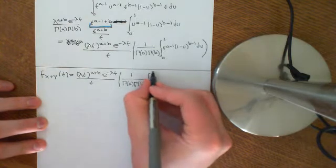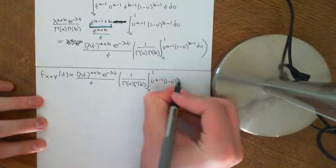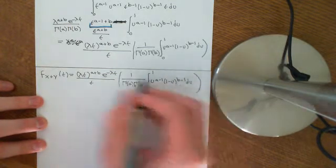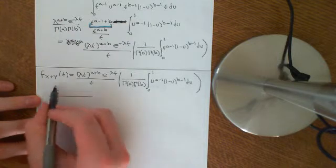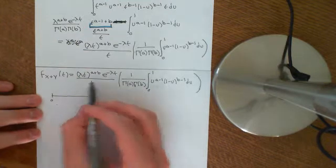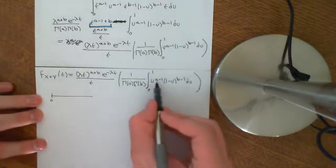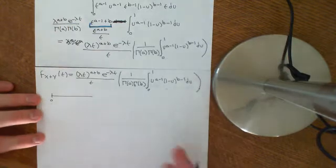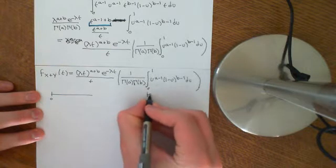Then times the integral from 0 to 1 of u to the power of a minus 1, times 1 minus u to the power of b minus 1, du. As far as t is concerned, this function is a variable in t — t is any positive number, the values that this convolution random variable can take on. The integral over u is not a variable in t; it's just a constant. You integrate it out and you get some function of a and b, which is a constant set by the values of a and b you chose.